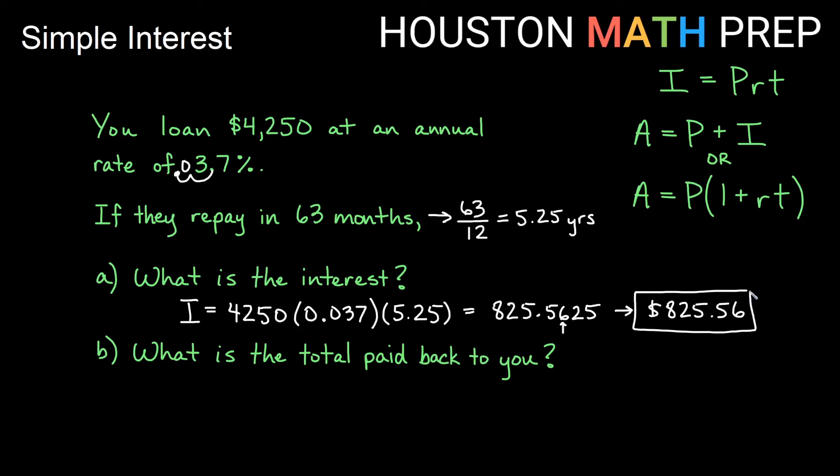And now what is the total paid back? Well, 825.56 plus the original loan. So in other words, for this one, A equals the principal plus the interest. So our accumulated value at the end of the loan is going to be the $4,250 plus that $825.56. And if we add those together, then we will get $5,075.56.